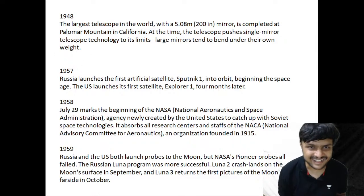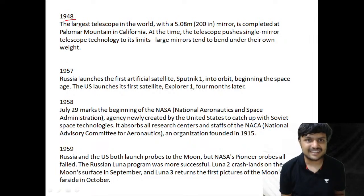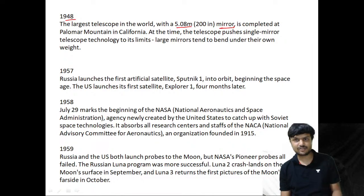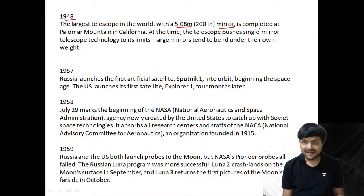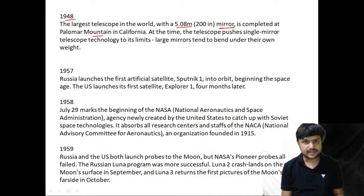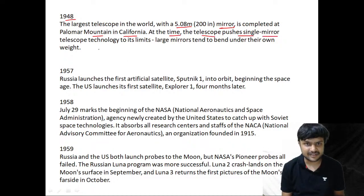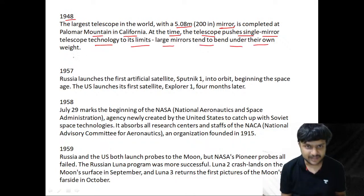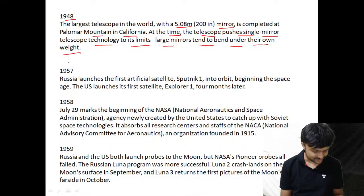In 1948, the largest telescope in the world, with a 5.08-meter mirror, is completed at Palomar Mountain in California. It is a reflecting telescope. At the time, the telescope pushes single-mirror telescope technology to its limit — large mirrors tend to bend under their own weight.